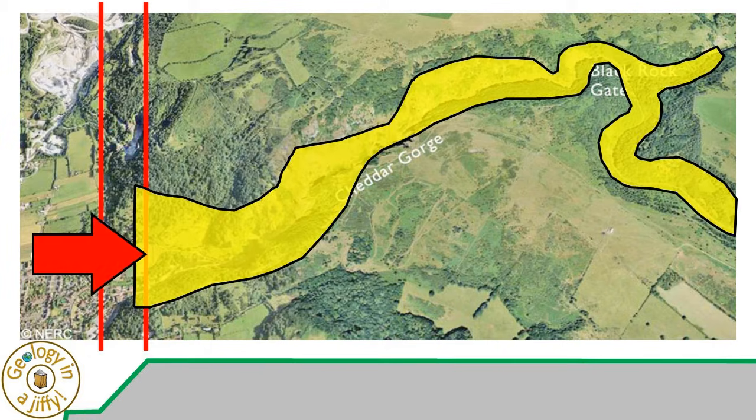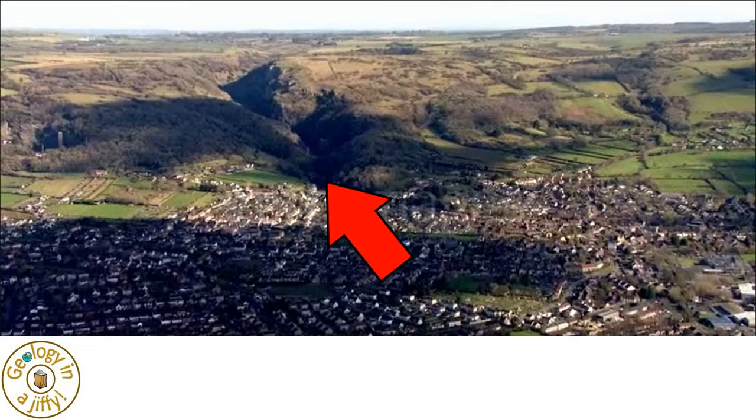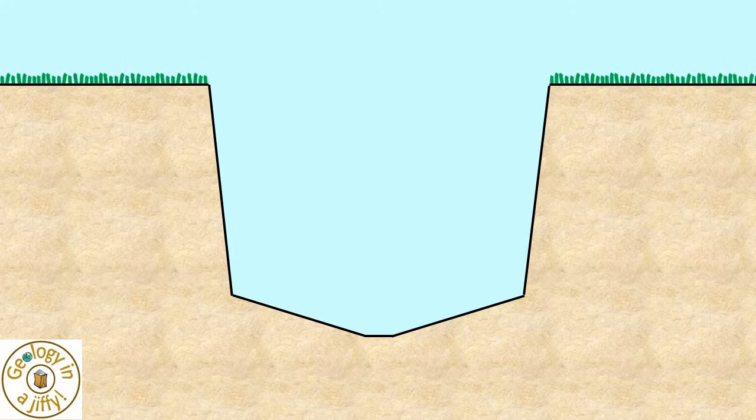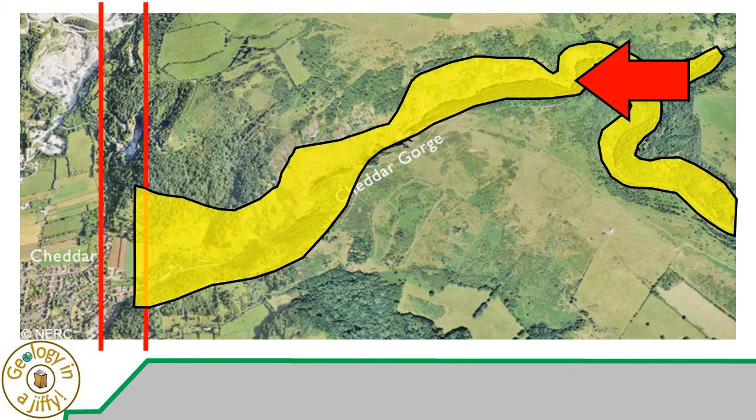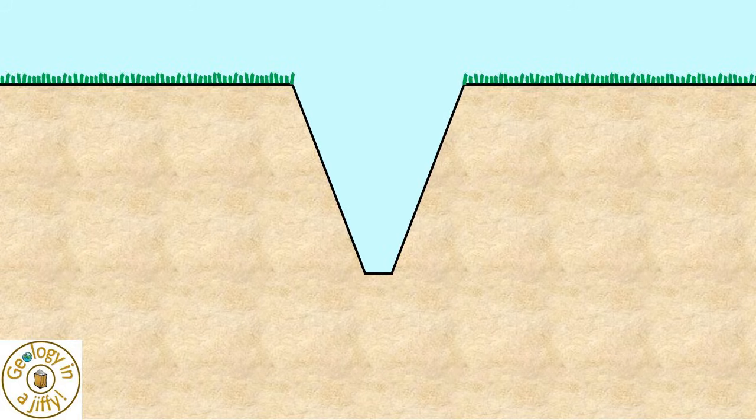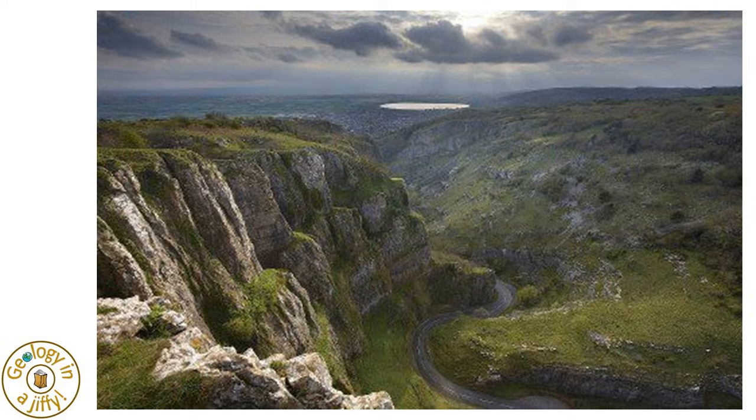If we view Cheddar Gorge where it exits to the valley at the scarp slope, the cross section is quite large, and more canyon in form. And if we look into the more upper, winding sections of the gorge, we see the steeply walled sides of the gorge, with the prehistoric riverbed at its base.